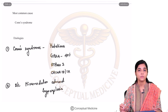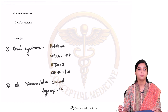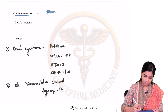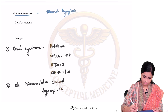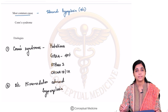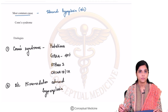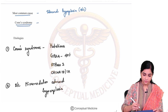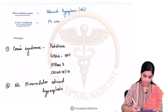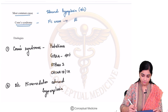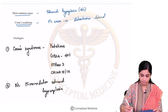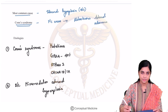What is the most common cause for mineralocorticoid excess? It is bilateral adrenal hyperplasia. Bilateral adrenal hyperplasia is the most common cause of mineralocorticoid excess. Then what is Conn's syndrome? Conn's syndrome is basically mineralocorticoid excess that occurs due to aldosterone production from an aldosterone-producing adrenal adenoma.